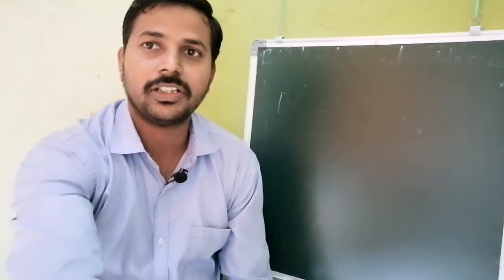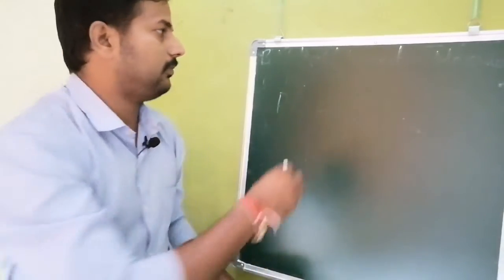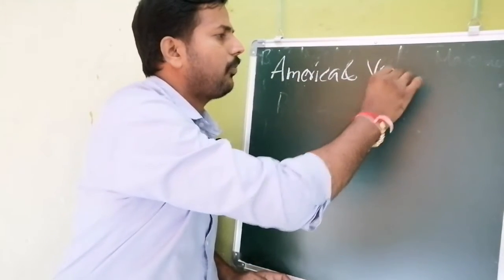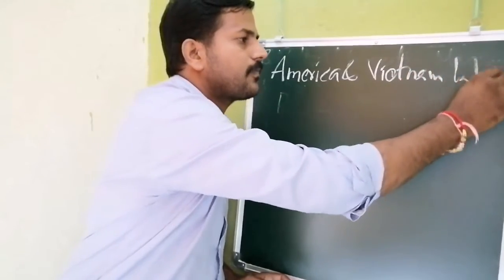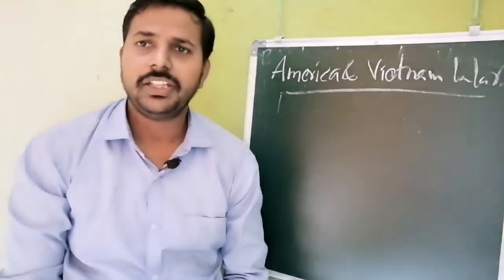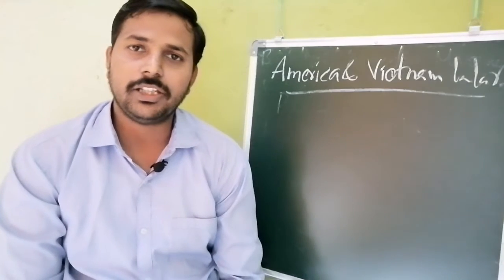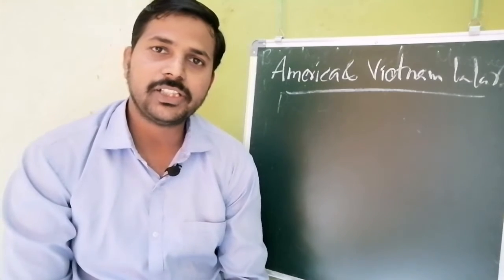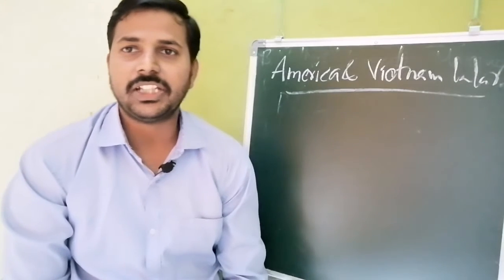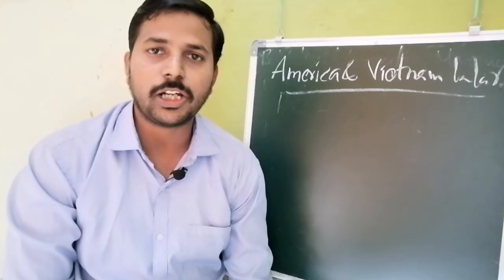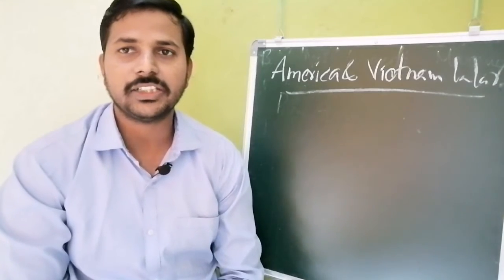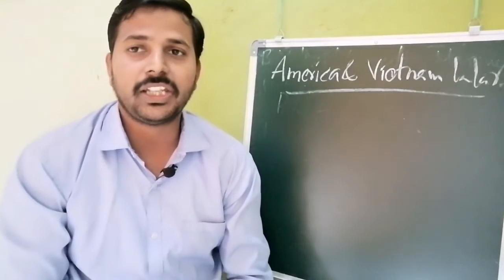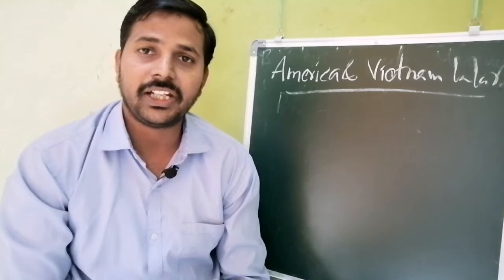Now let us discuss the America and Vietnam War. In the Vietnam War, America came with many weapons. America had already proven itself — especially by dropping atom bombs on Hiroshima and Nagasaki during the Second World War. After using those weapons, many countries started to fear America's power.